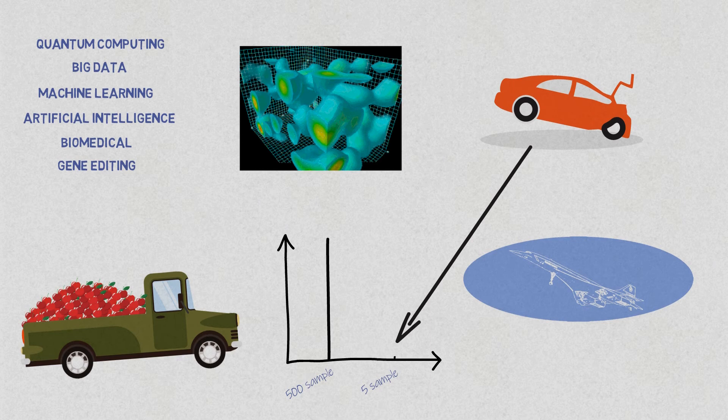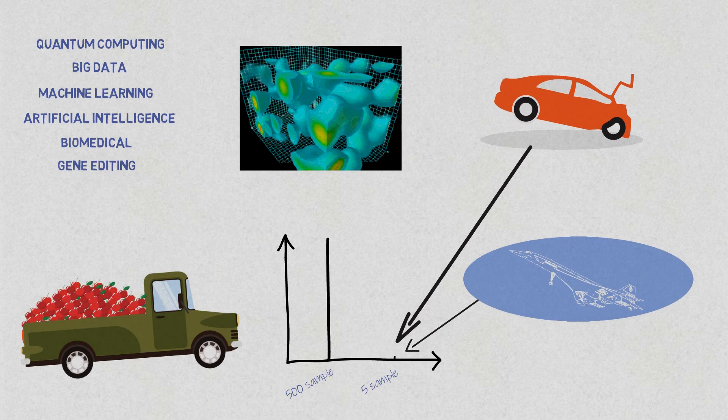Once upon a time, there was a supersonic aircraft named Concorde. Concorde could reach speeds of 2,179 km/h and was considered the safest aircraft in the world. However, since supersonic airlines were relatively new and had far fewer recorded flight miles than traditional aircraft, after one crash, Concorde became labeled the most unsafe aircraft and was forced to retire in 2003.